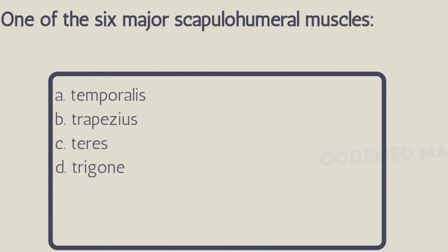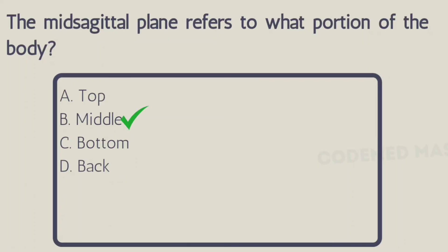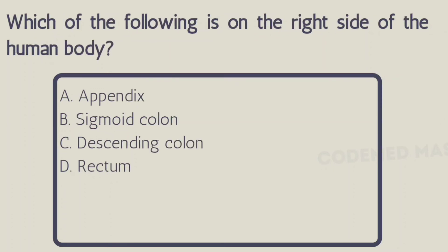Next question: one of the six major scapulohumeral muscles — Option A: temporalis, Option B: trapezius, Option C: teres, Option D: trigone. The right answer is Option C, teres. Next question: the midsagittal plane refers to what portion of the body? Option A: top, Option B: middle, Option C: bottom, Option D: back. The right answer is Option B, middle. Next question: which of the following is on the right side of the human body? Option A: appendix, Option B: sigmoid, Option C: descending colon, Option D: rectum. The right answer is Option A, appendix.